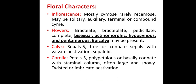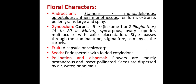Corolla petals 5, polypetalous or basally connate with staminal column. Androecium: stamens numerous, monadelphous, epipetalous, anthers monothecous. Gynoecium: carpels 5 to numerous, syncarpous, ovary superior, multilocular with axile placentation. Fruit a capsule or schizocarp. Seeds endospermic with folded cotyledons.